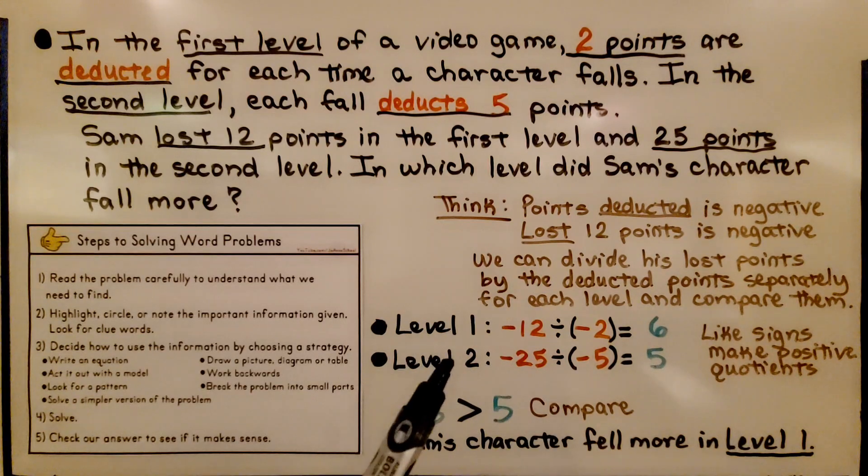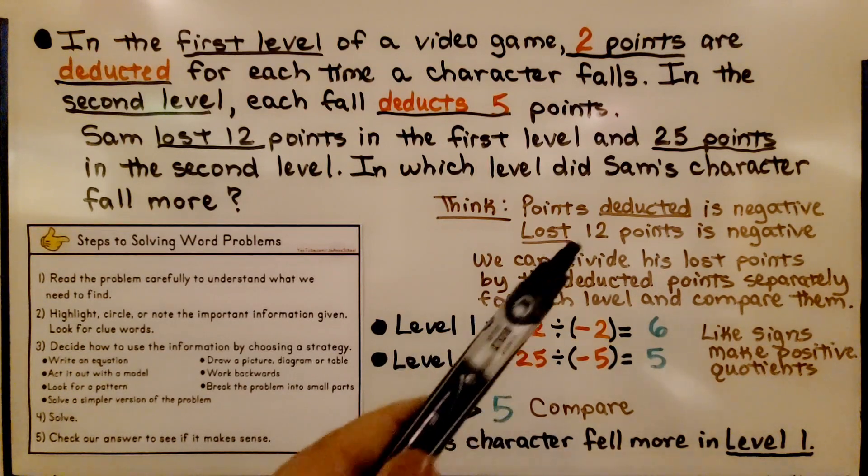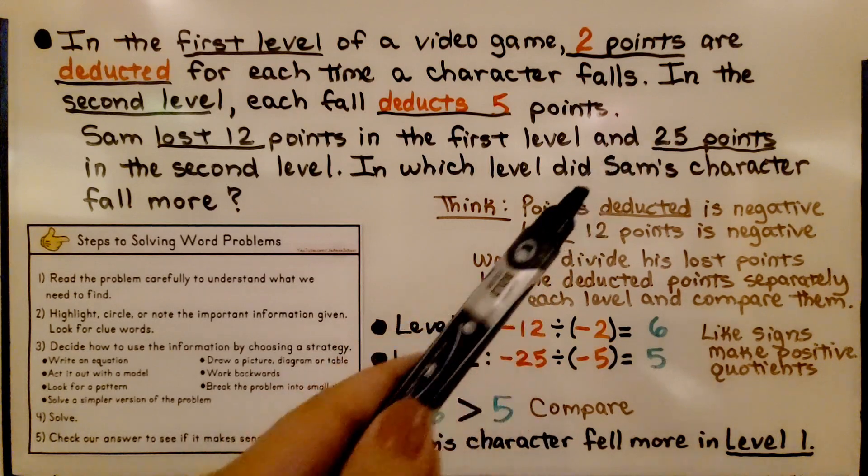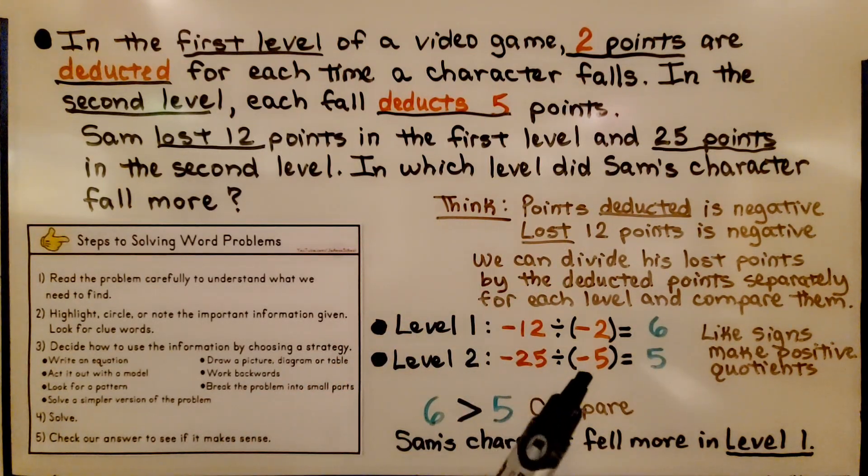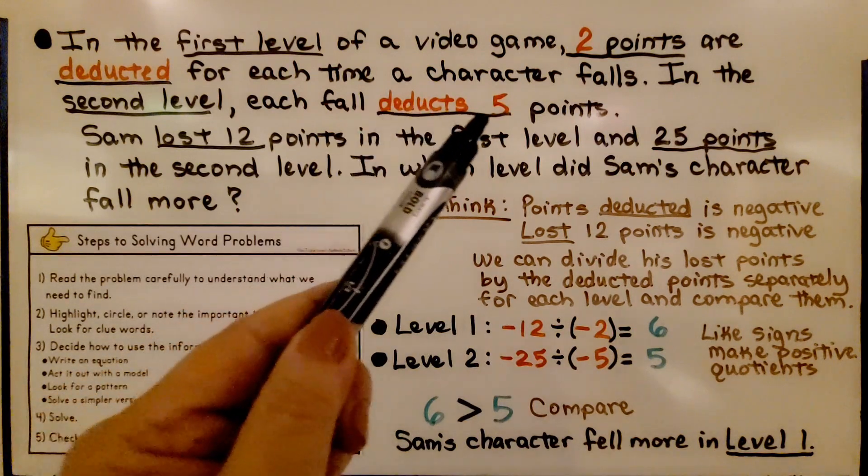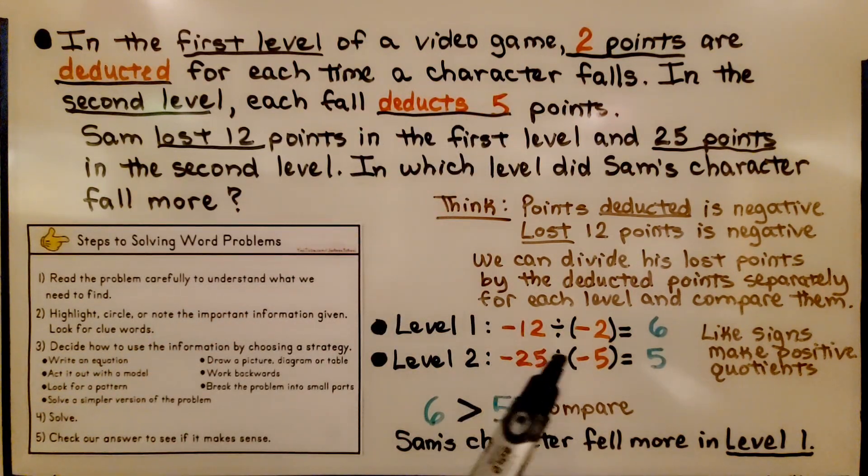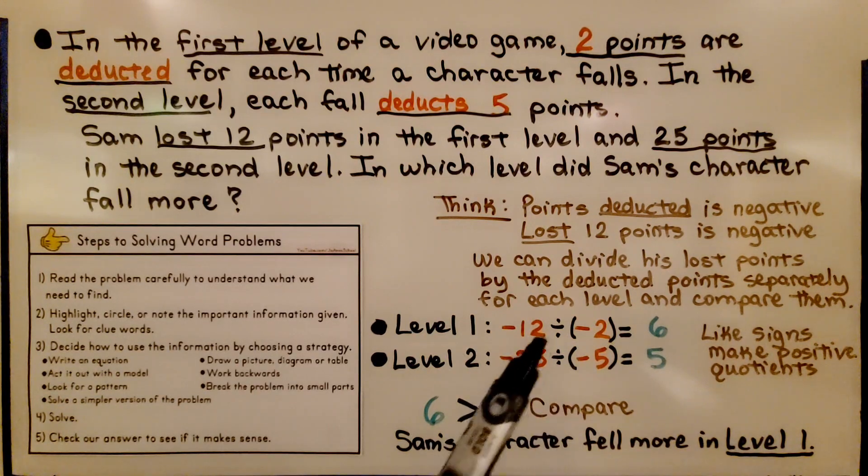For level 2, we have a negative 25 because he lost 25 points in the second level. And it's divided by negative 5 because the second level deducts 5 points. We have like signs. They make a positive quotient. And 25 divided by 5 is 5. It's a positive 5.